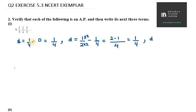Let's find at the last point: 3/4 minus 1/2. Again we need to take LCM. The LCM will be 4, and we need to multiply the second term with 2, so it is 3 minus 2, which is 1/4 again. You can see that the common difference is the same in each case. If the common difference is the same, then yes, it is an AP.